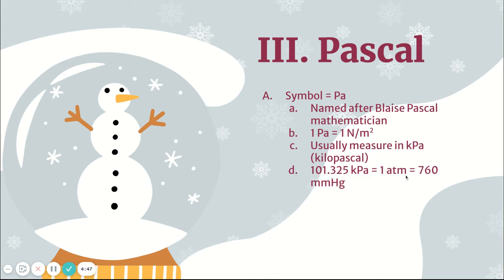So: 1 atm = 760 mmHg = 760 torr = 101.325 kPa — all of these numbers are equal to each other and can be used as conversion factors. We use kilopascals rather than pascals because 101,325 pascals is a really big number; 101.325 is just easier to work with.